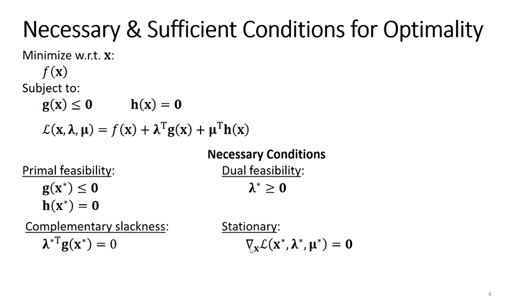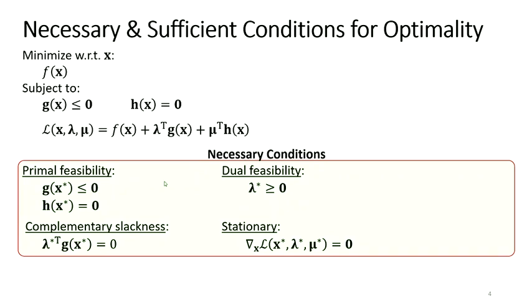These are the four first-order necessary conditions. Since the first two — the feasibility conditions — are trivial, we'll look at complementary slackness and stationary conditions graphically. And of course, these are the second-order sufficient conditions for optimality.